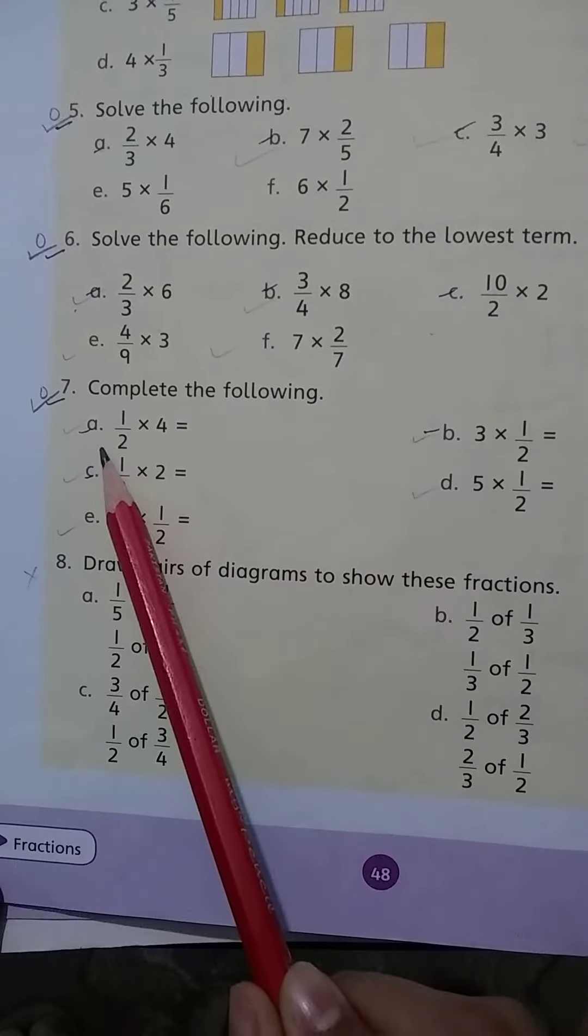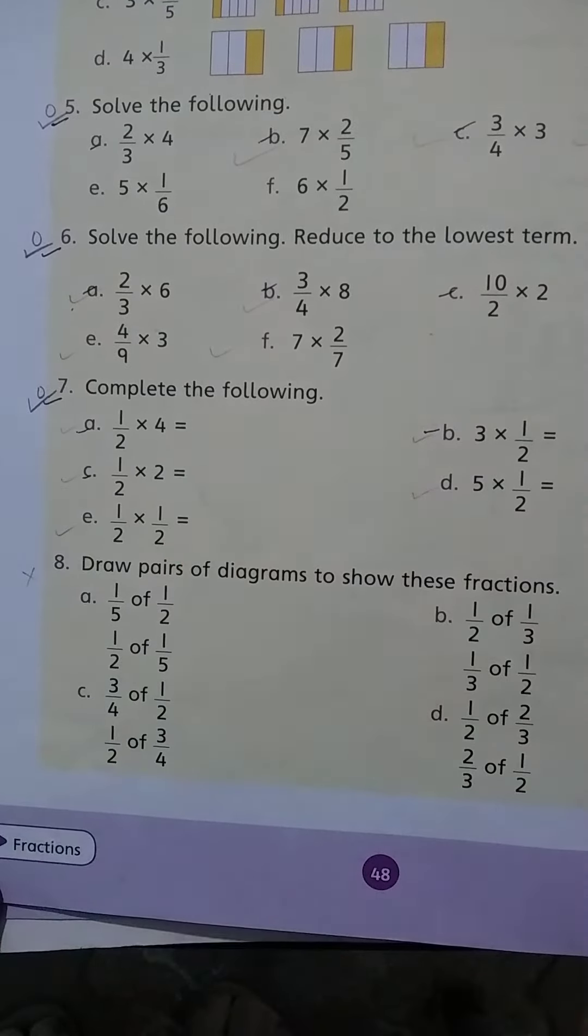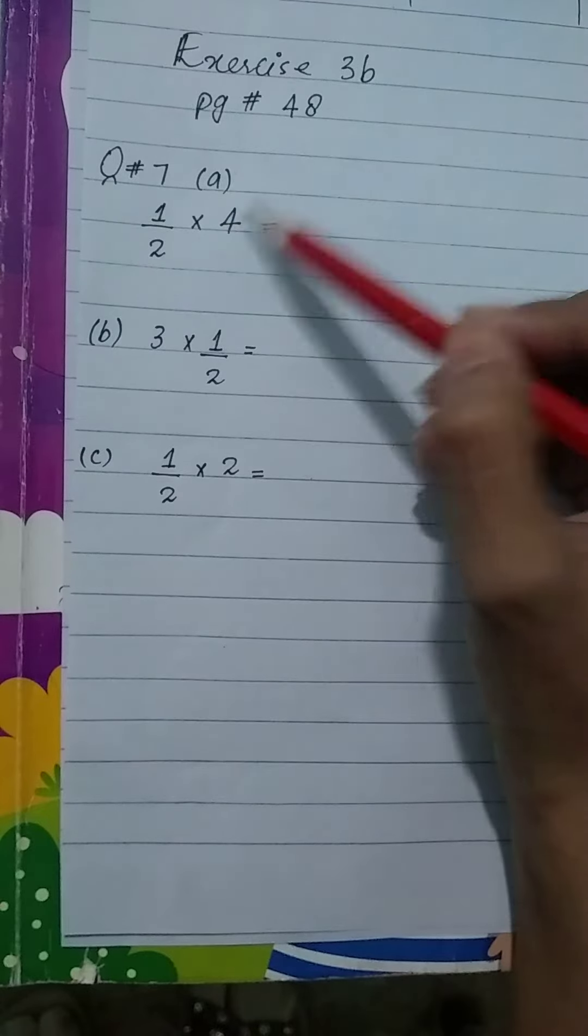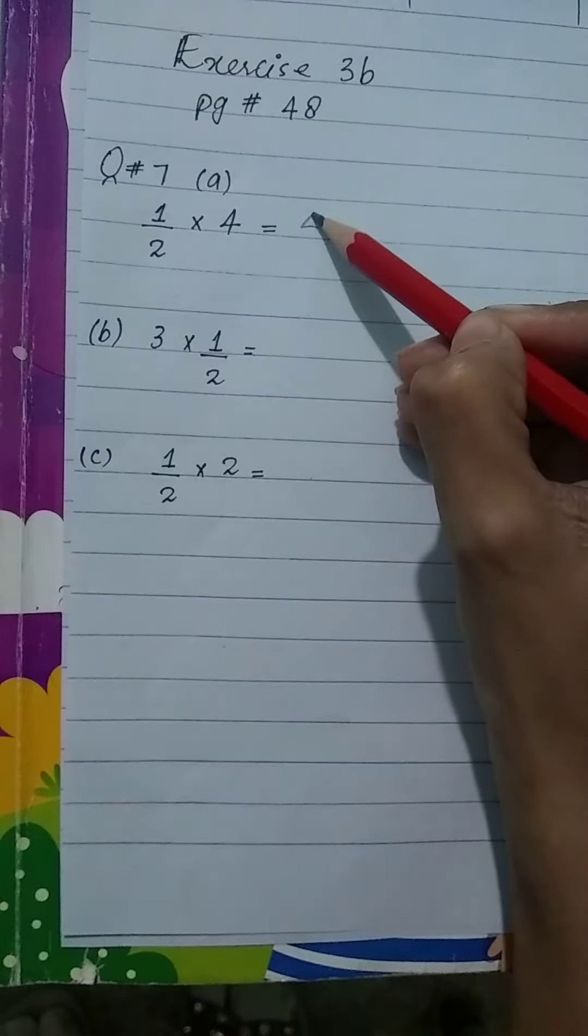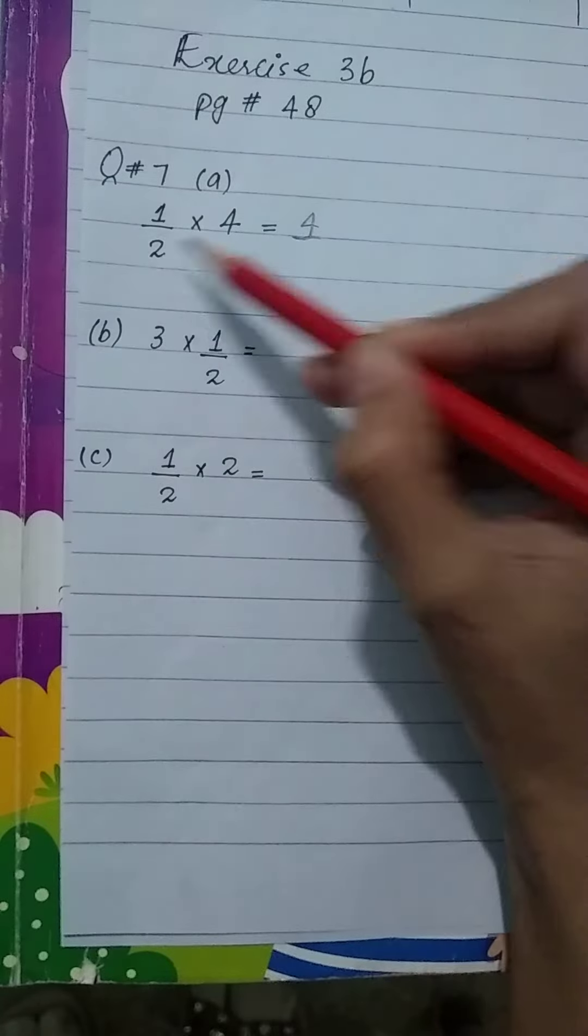Now look at the first part. 1 over 2 multiply by 4. Students, solve it. 1 multiply by 4 means 1 times 4 is 4 over 2.